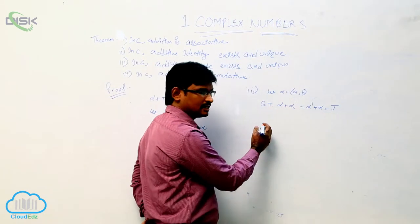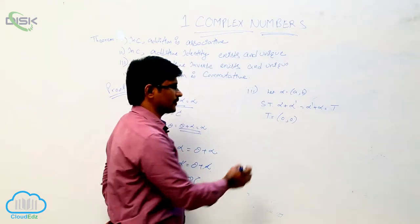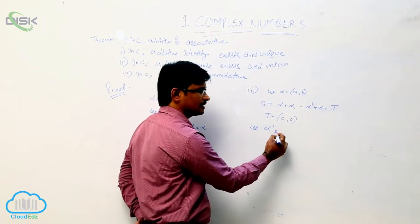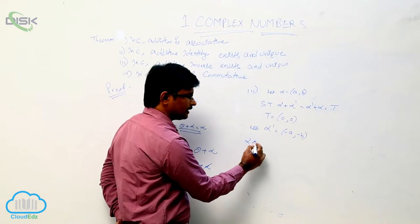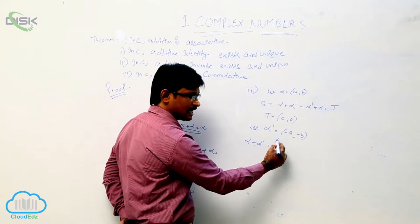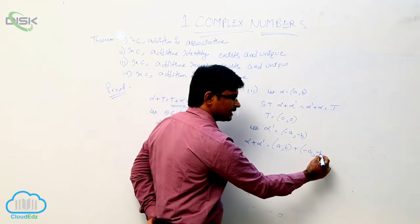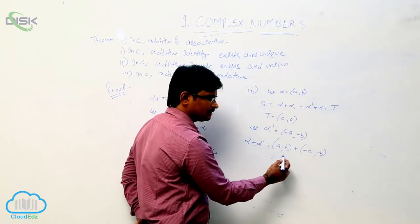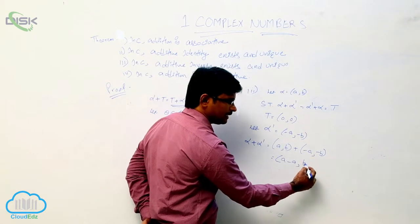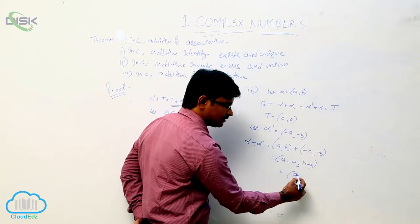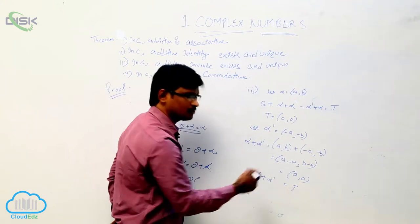We consider alpha equal to (a, b), and we know the additive identity is (0, 0). Let alpha_dash equal to (−a, −b). We find alpha plus alpha_dash: that is (a, b) plus (−a, −b). In addition we add corresponding elements, giving (a − a, b − b), which equals (0, 0) — the additive identity t. So alpha plus alpha_dash equal to t.